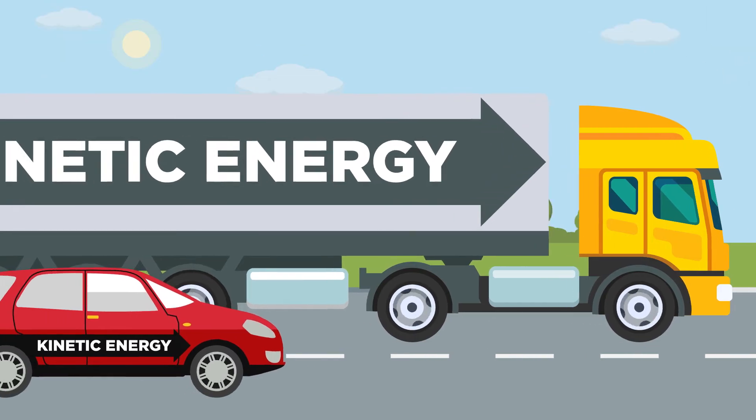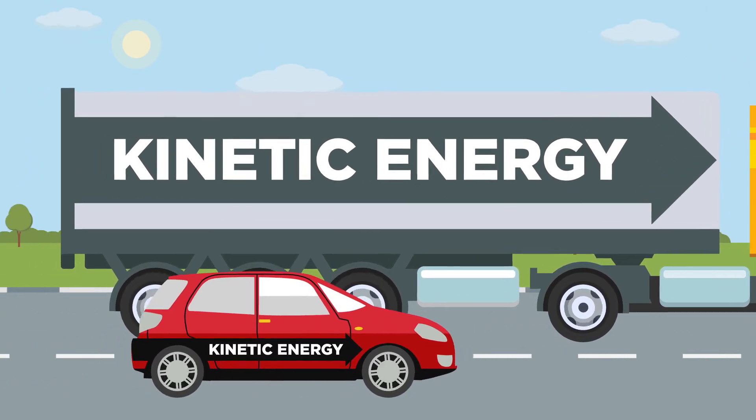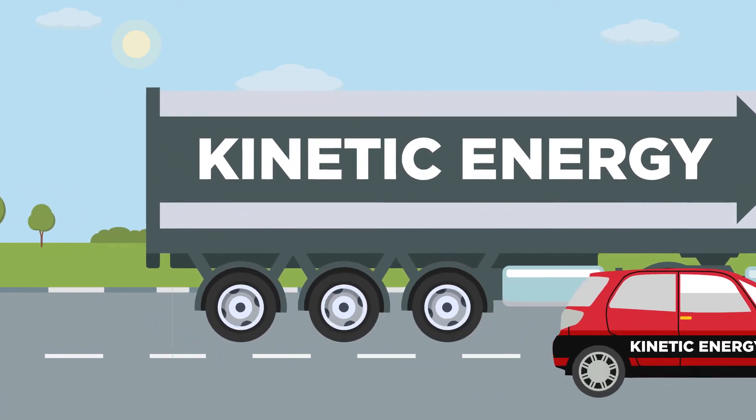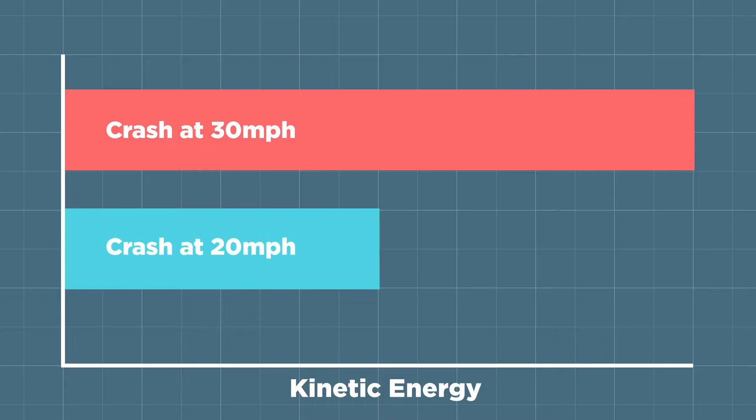When you're driving, it's hard to perceive that a slight increase in speed is really so damaging. It's easy to let speed creep up. But a crash at 30 miles per hour involves twice as much energy and destructive potential as a crash at 20.